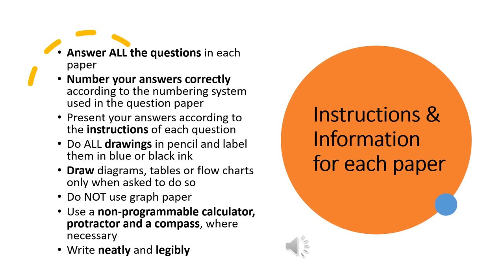Some general instructions for each paper: answer all questions; number your answers correctly according to the numbering system used in the question paper; present your answers according to the instructions of each question. Do all drawings in pencil and label them in blue or black ink. Draw diagrams, tables or flowcharts only when asked to do so. Do not use graph paper — if you have to draw a graph, use the folio in your answer booklet. You may use a non-programmable calculator. Make sure you have a protractor and compass for a possible pie chart. Write neatly and legibly.